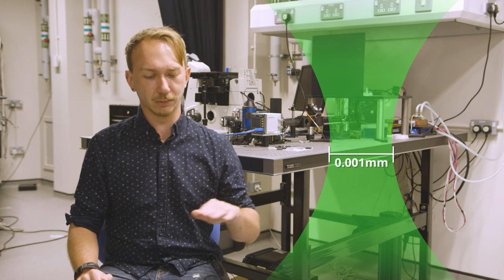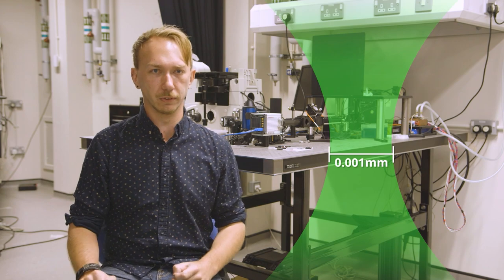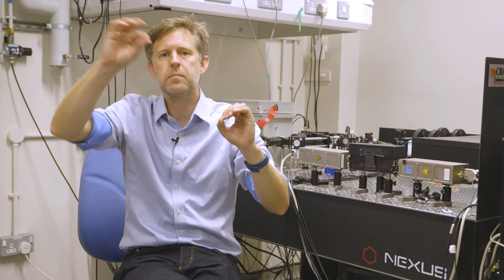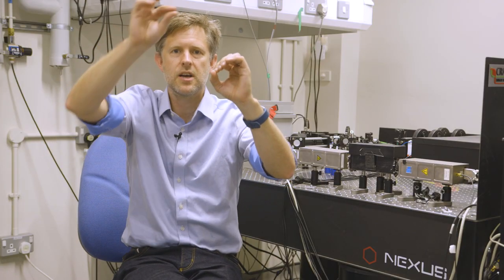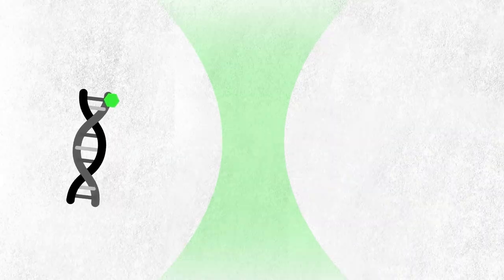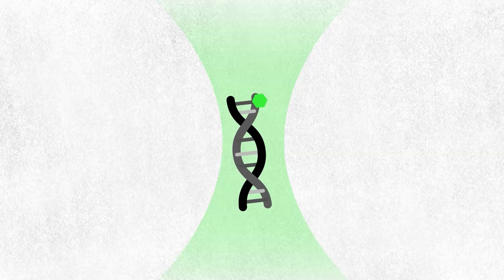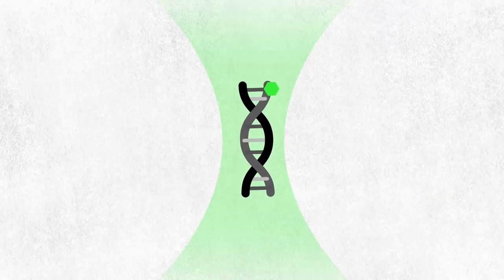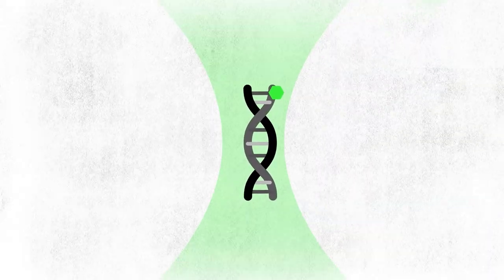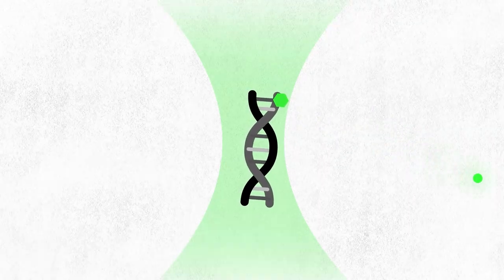And so when the biomolecule is diffusing around and it's labeled with a dye that fluoresces, at some point it'll enter the detection volume. At that point it's excited with the laser and then it emits its fluorescence.